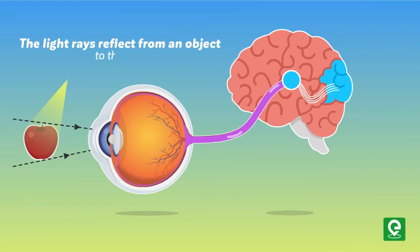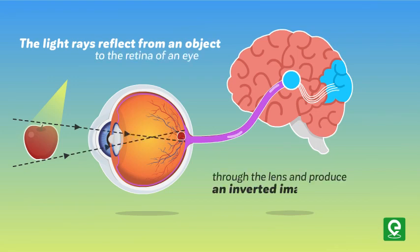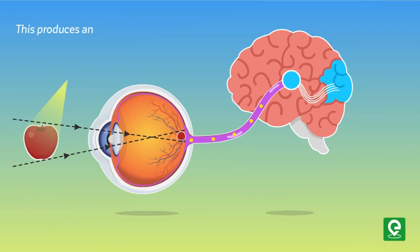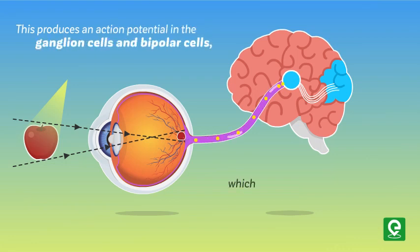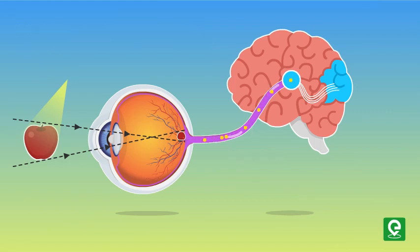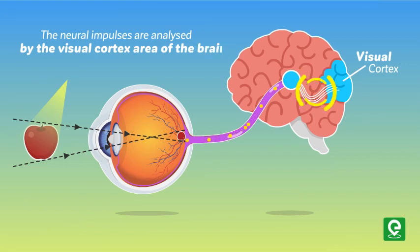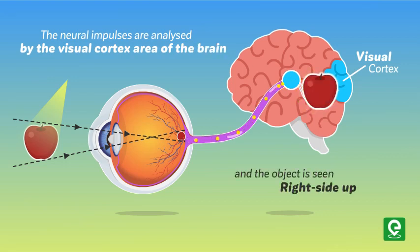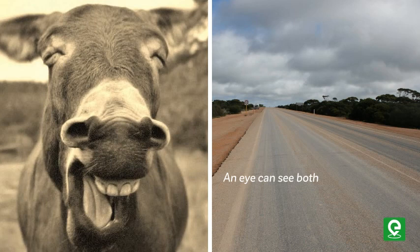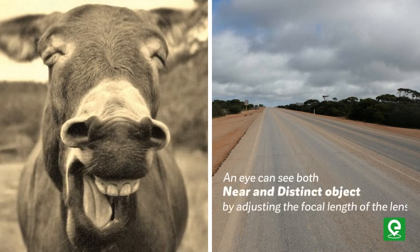Light rays reflect from an object to the retina of the eye through the lens and produce an inverted image onto the retina. This produces an action potential in the ganglion cells and bipolar cells, which is transmitted to the brain by the optic nerves. The neural impulses are analyzed by the visual cortex area of the brain, and the object is seen right side up. The eye can see both near and distant objects by adjusting the focal length of the lens.